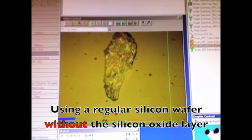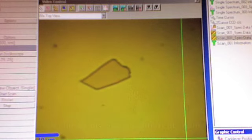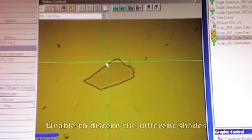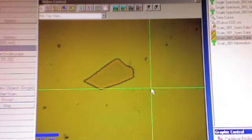Here we have repeated the experiment with a regular silicon wafer without a silicon oxide layer. As you can observe, you can no longer discern the different shades that distinguish single layers from multiple layers. Again, you can see that the sharp edges distinguish graphite flakes from tape residue.